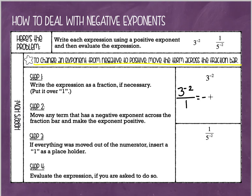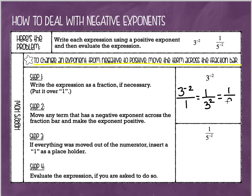Now we want this exponent of negative 2 to become a positive 2. So what I need to do is just take it from the numerator and move it to the denominator. Once I do that, that negative exponent is going to change into a positive. I can take this one step further and evaluate it, because 3 to the second power simplifies into 9 — 3 times 3 is 9.